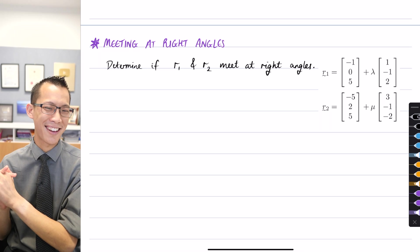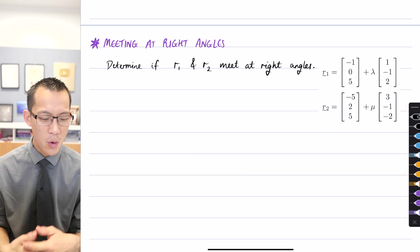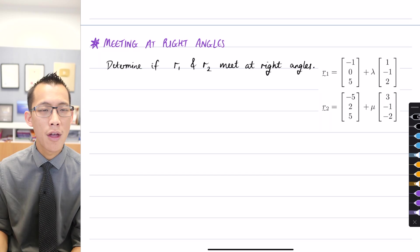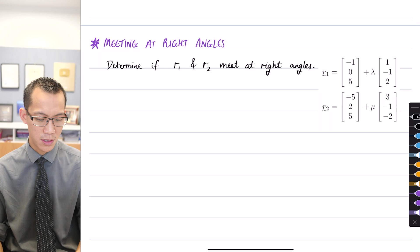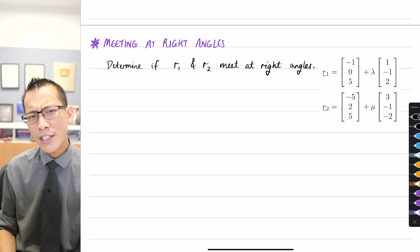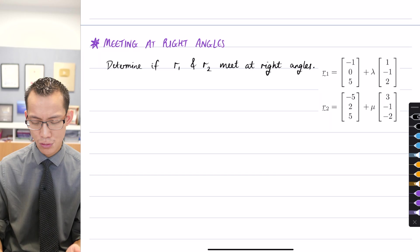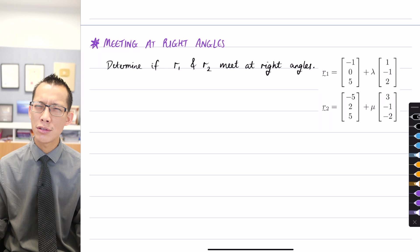So this example I found following up your question last time about whether we can call them R1 and R2 when we have a couple lines. The textbook does exactly that. Here are two lines on the right hand side and our question is determine if R1 and R2 meet at right angles.